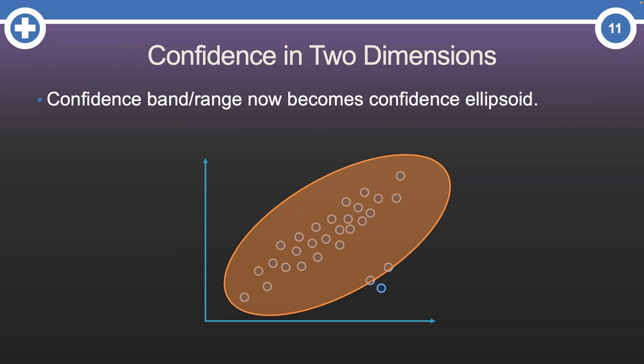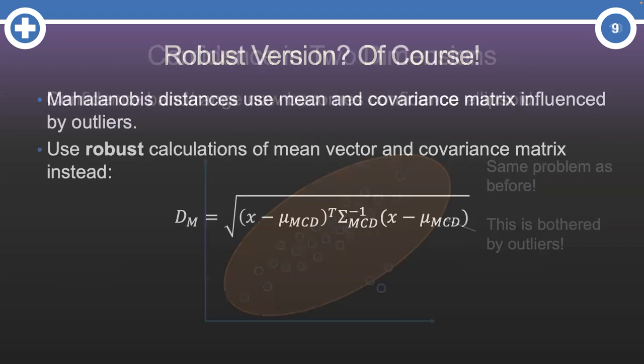But wait, why only one? Well, just like with the original z-score, Mahalanobis distances suffer from the same problem. The calculation of the multivariate mean and covariance matrix are bothered by the very outliers we are trying to discover.